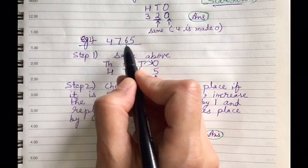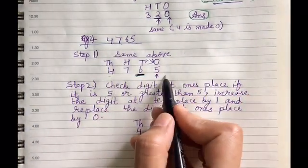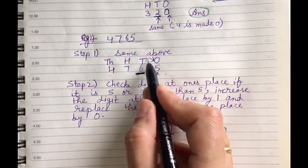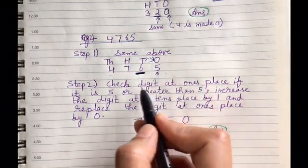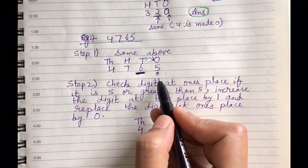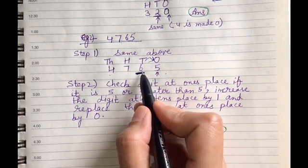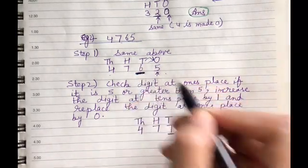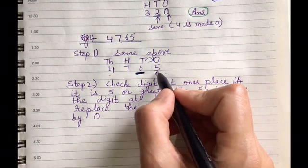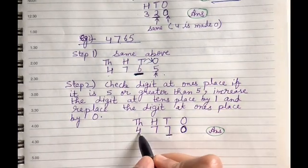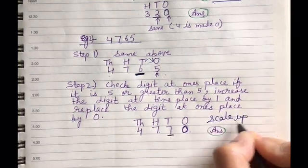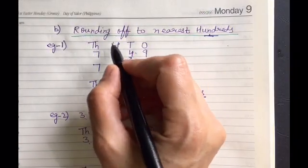Another example: place the number 4765 in the place value chart. Underline the digit at the tens place and check the next right digit — the ones place — which is 5. If this digit is greater than or equal to 5, we add 1 to the digit at the tens place: 6 plus 1 equals 7. The ones digit becomes 0, so the answer is 4770. This is called scaling up after rounding off to the nearest ten.